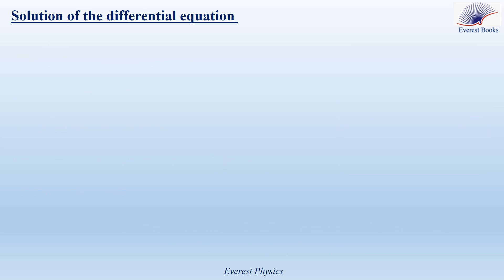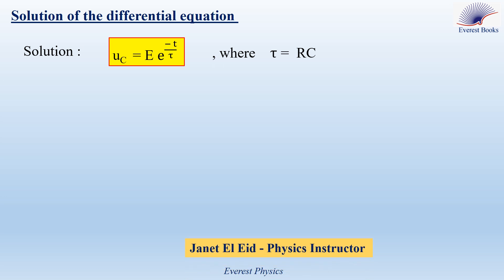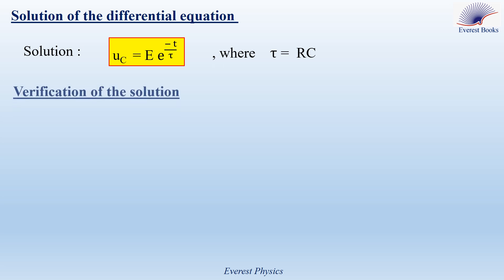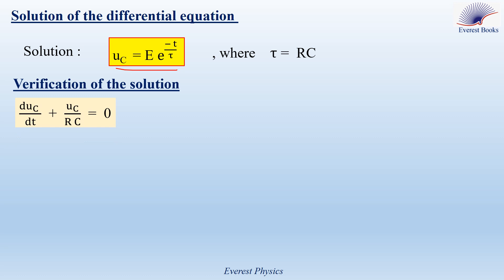The solution of the obtained differential equation is given by UC equals capital E times e to the power minus t over tau, where tau equals RC.